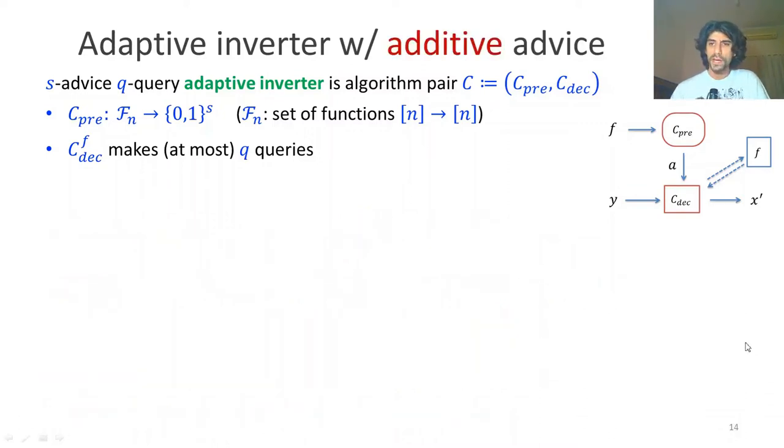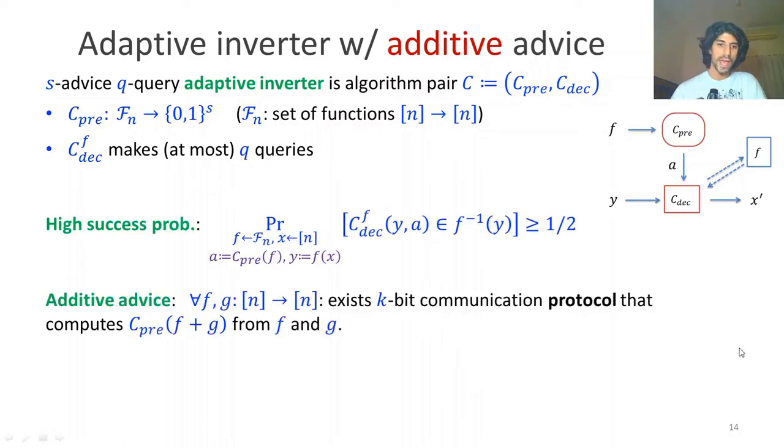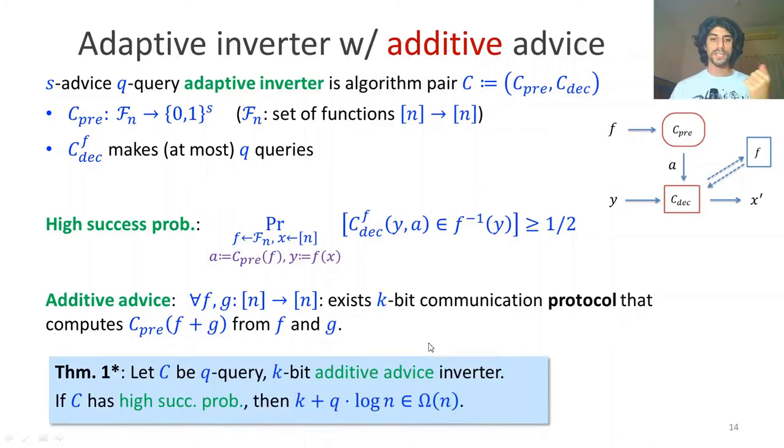We have another case very similar to the first. It naturally extends to the case of additive advice, which is basically any case where, given two functions f and g, we can figure out a way with a little communication to compute the advice of the sum f plus g. The previous theorem is just a private case of this one. Here, it states that either the communication required to compute the combined advice or the number of queries must be at least order of n over log n.